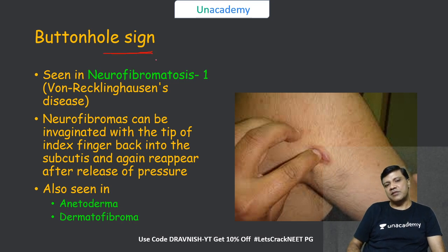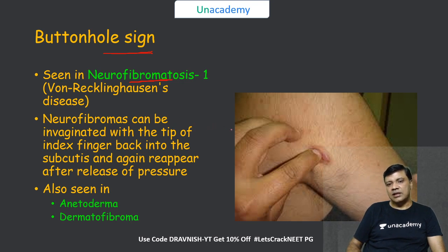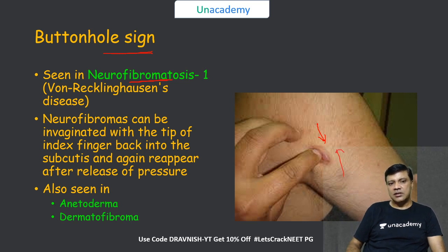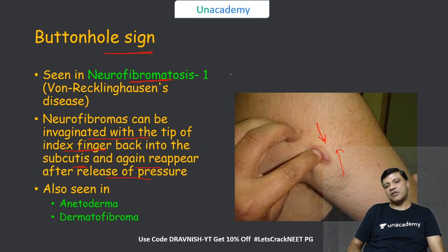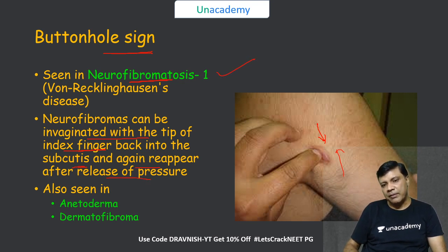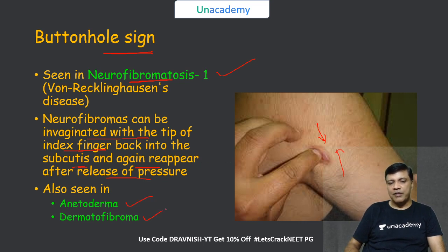The buttonhole sign is a feature of neurofibromatosis or von Recklinghausen disease. The lesions of neurofibromatosis can be pressed inside toward the subcutaneous tissue with the tip of the index finger and will reappear back on release of pressure. Apart from neurofibromatosis, the buttonhole sign can also be seen in anetoderma and dermatofibromas.